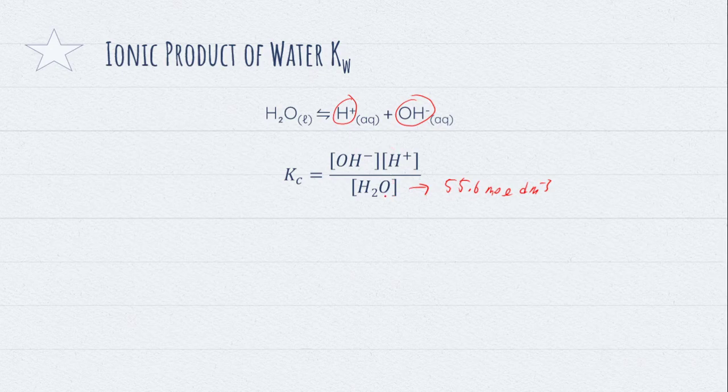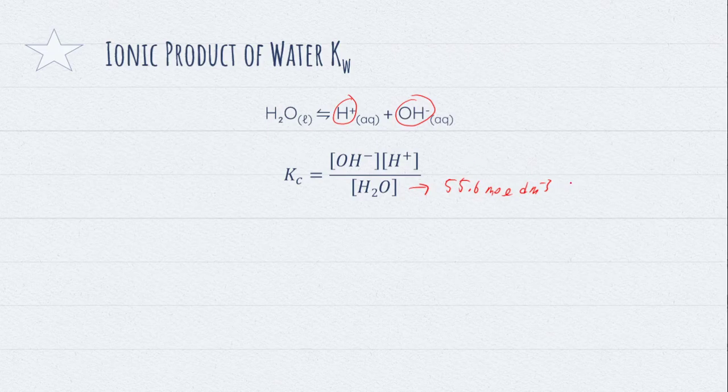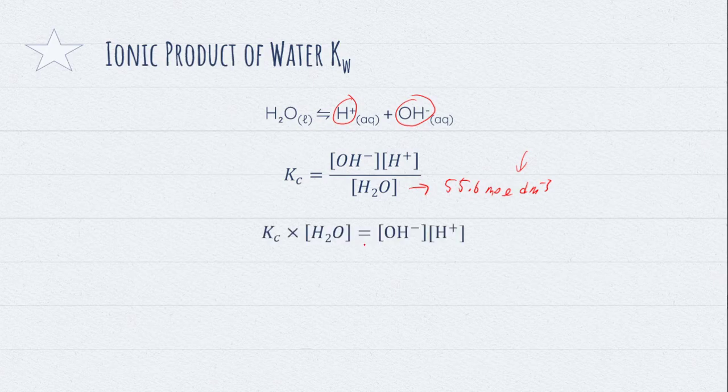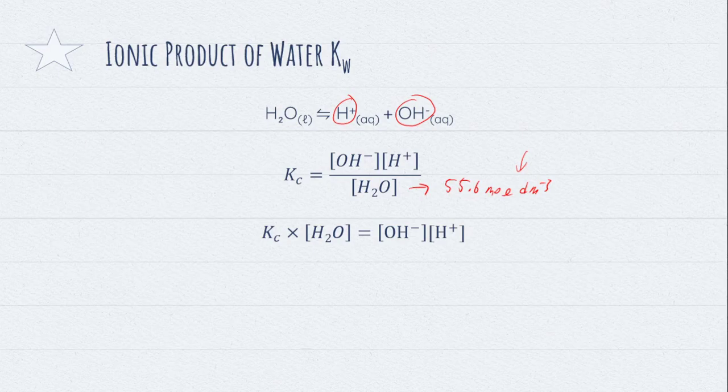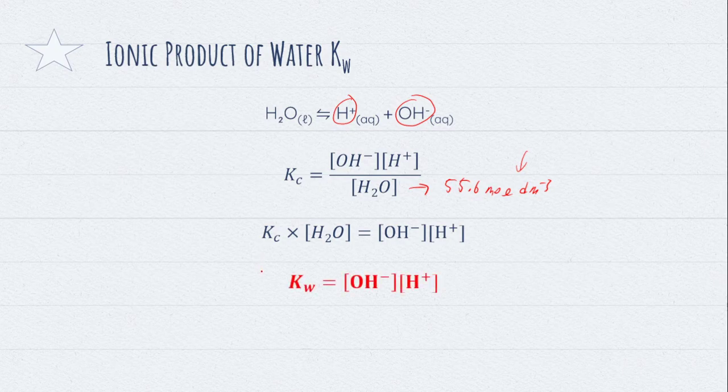Because of that, the concentration of H2O would remain relatively constant at this value as well. Because of that, we can just simply multiply 55.6 on the left and the right, or basically multiply the concentration of water. And then, combining the left-hand side, we then have Kw.